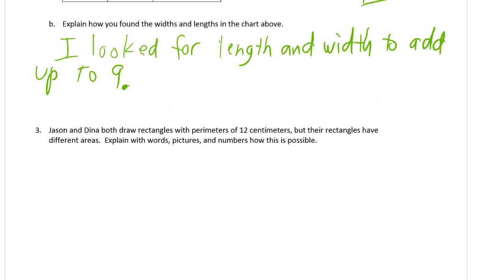Jason and Dina both draw rectangles with perimeters of 12 centimeters. But their rectangles have different areas. Explain with words, pictures, and numbers how this is possible. We just need an example. And then the picture of it will be our explanation. A labeled picture and a sentence. That's all we need here.